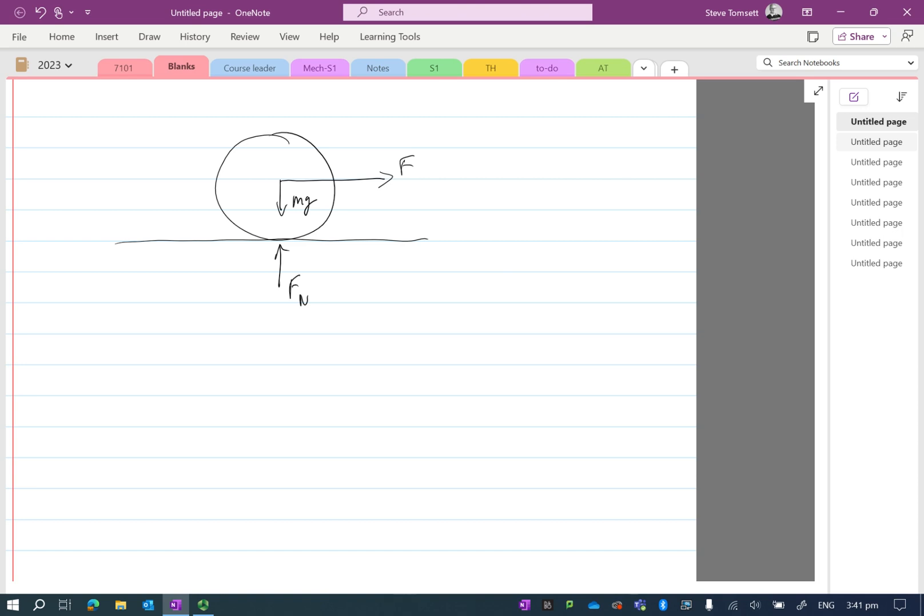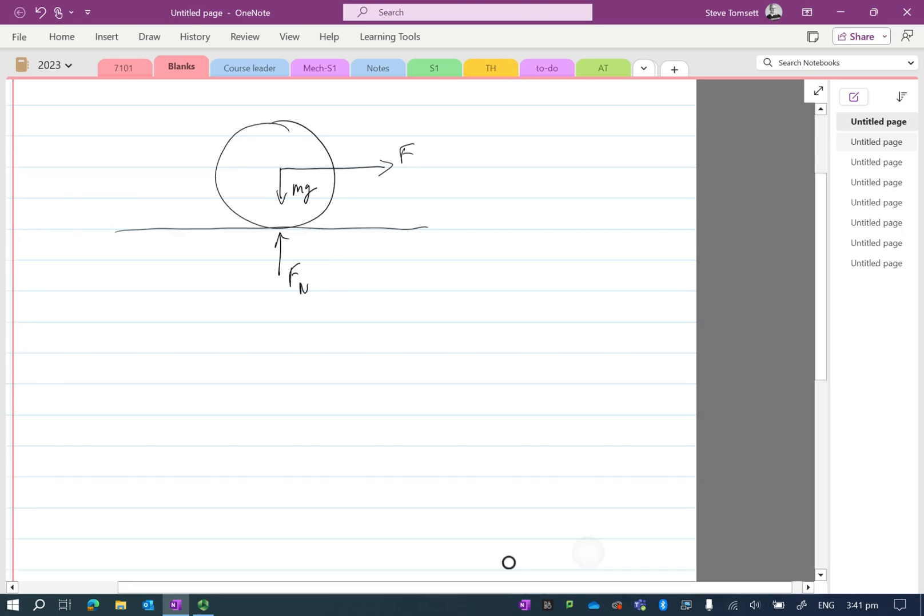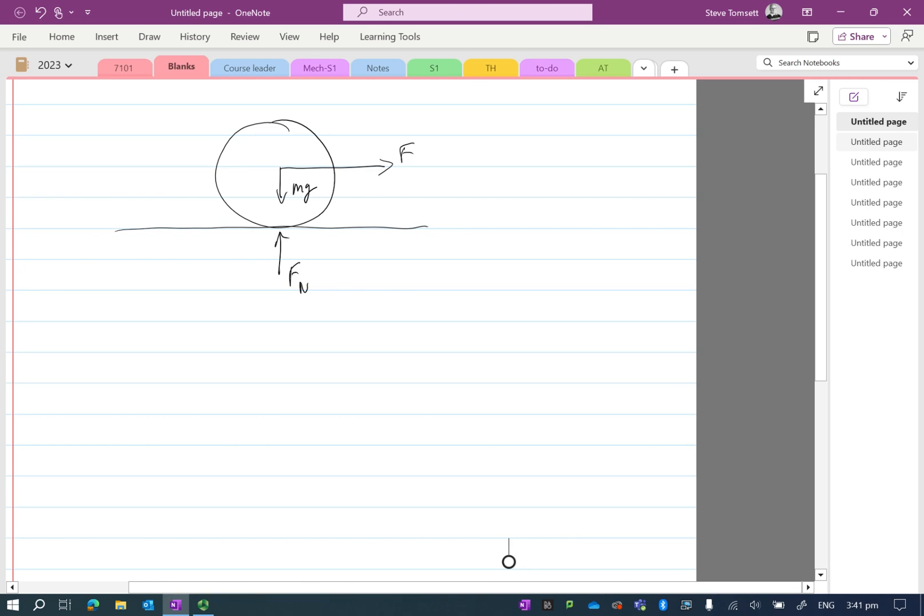If we have a force acting to the right, then I must have a force acting to the left in order to counteract that, in order that my sum of forces equals zero. So there will be a friction force under here.